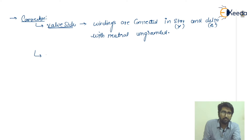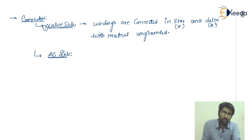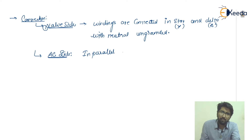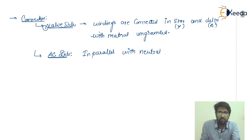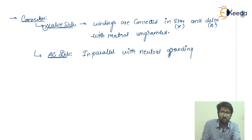The second connection is the AC side. On the AC side, it is connected in parallel with neutral grounding. I will explain this in more detail when discussing the converting transformer unit.